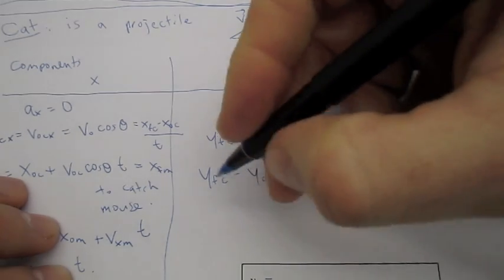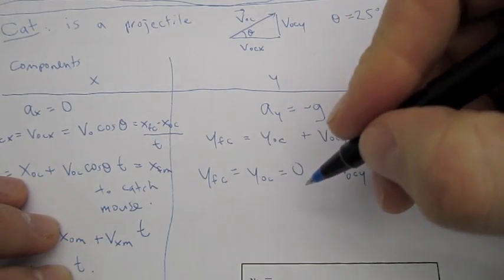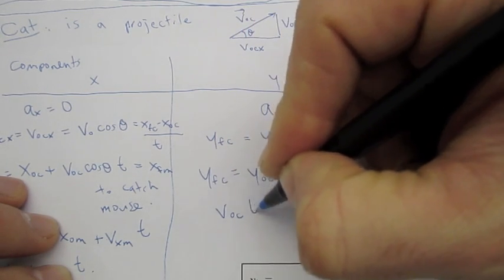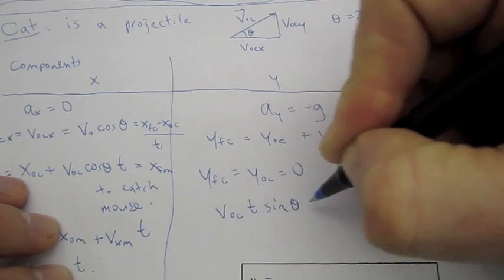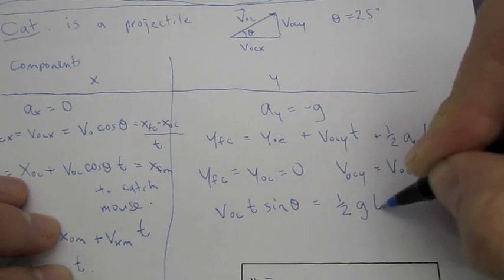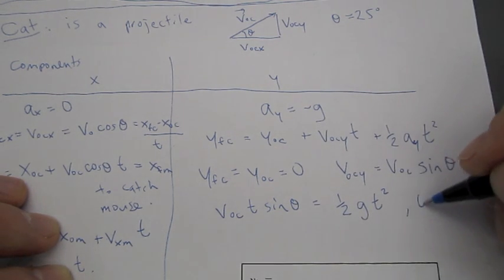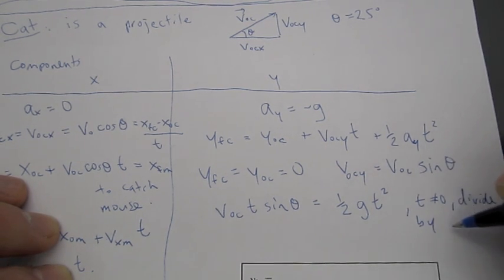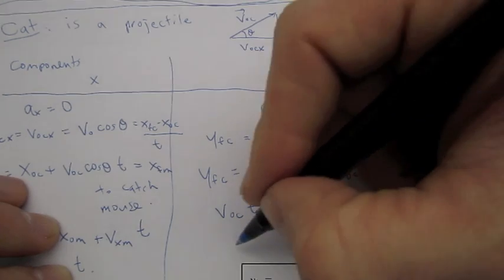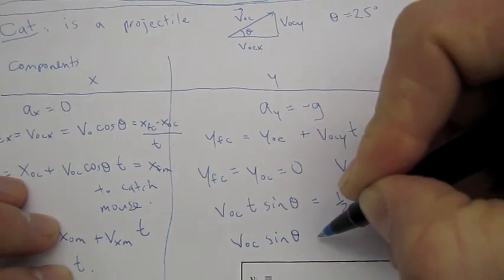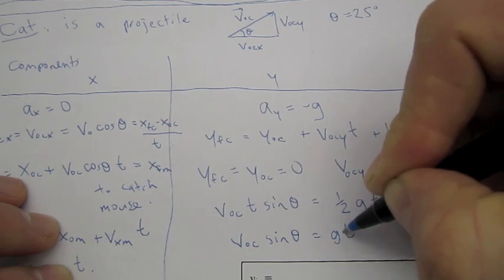So, plugging those values in to this equation above and solving out a little bit, you get V initial of the cat times time times sine of theta is equal to 1 half G times T squared. And, if T does not equal 0, you can divide by T, both sides by T, in which case you get V initial cat times sine of theta is equal to G times T over 2.